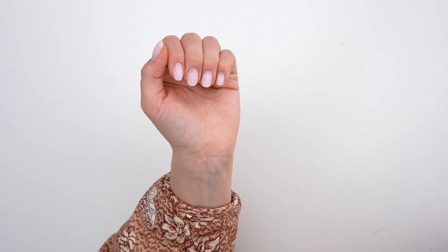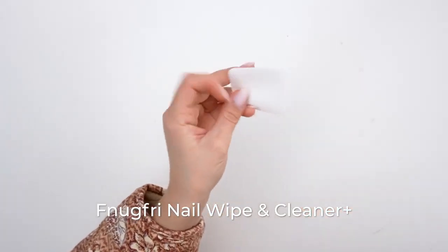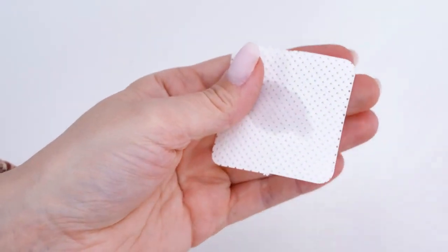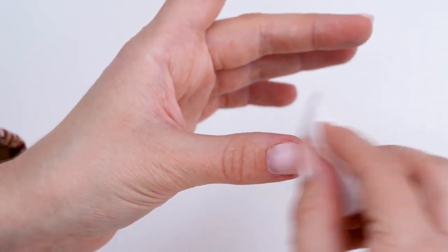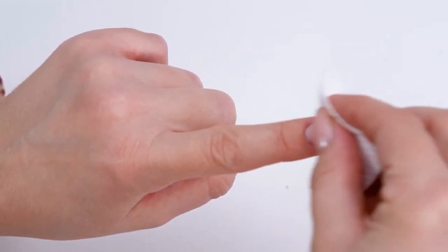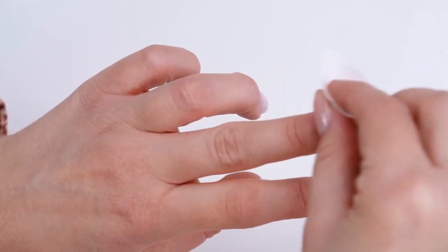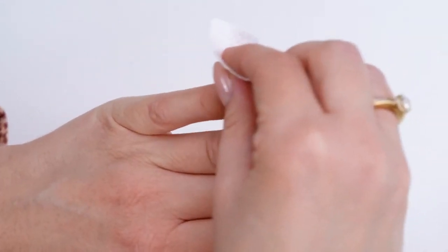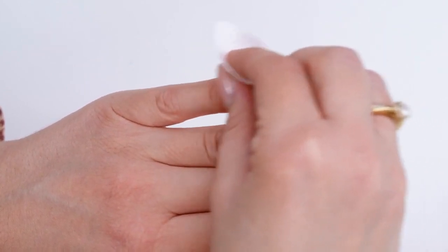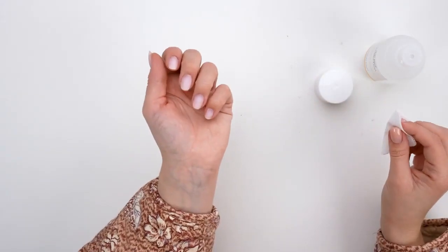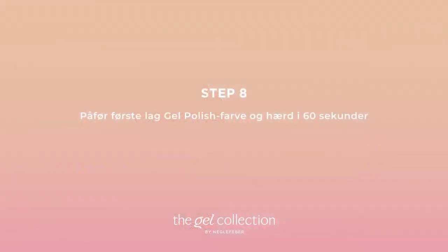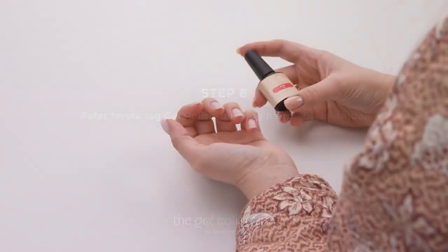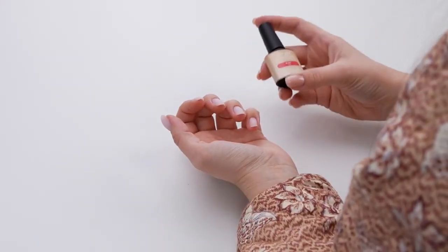At this point, the only thing that remains is to grab a lint-free wipe, apply some cleaner to it, and eliminate all the dust from the nail, which has accumulated a significant amount of dust after we just completed this filing. Let's proceed with removing the dust from the nail to ensure it is completely clean and free of any debris.